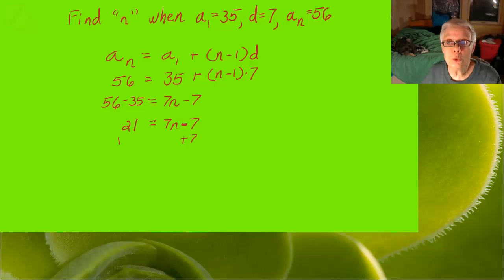Now I'm going to add 7 to both sides in order to isolate the 7n. I'll have 28 on the left equals 7n on the right.